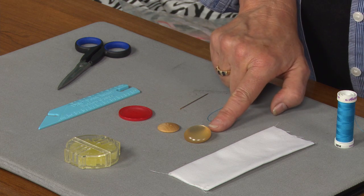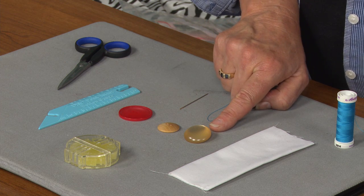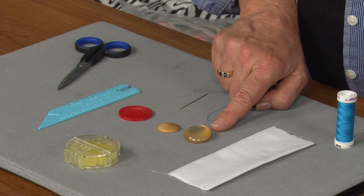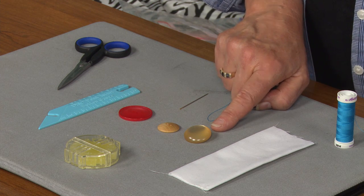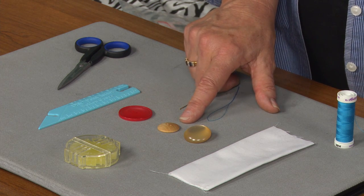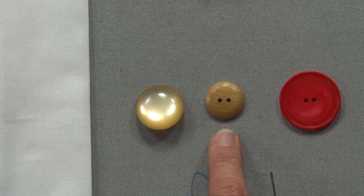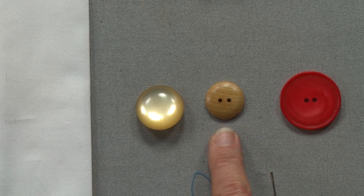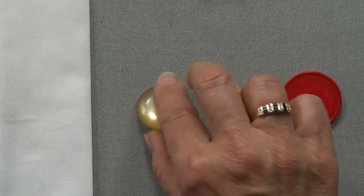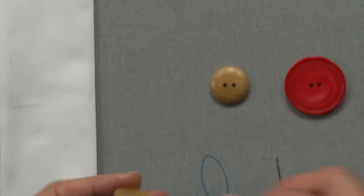The first one here is what we call a shank button. If you notice, there are no holes on the top of the button, as opposed to the type that we typically see on shirts that have two holes or sometimes four holes that are exposed on the top.